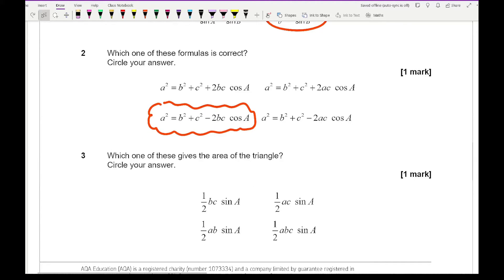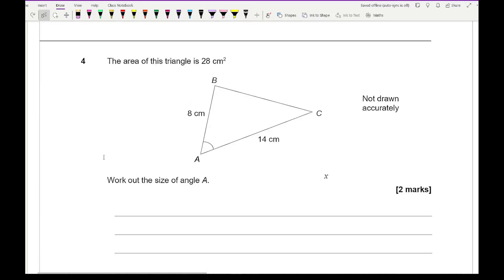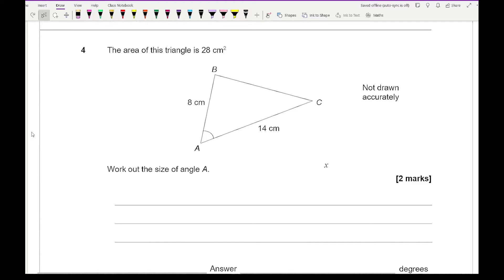For our next one number 3 it says which of the following gives the area of a triangle? Now here what you're looking for is the three letters so no repeated letters whether it be uppercase or lowercase in which this first one is the only formula which uses bc and then we've got the other letter there. So moving on to question 4 it says the area of this triangle is 28cm squared and it says work out the size of angle a. I'm not too sure why we've got a rogue x so let's just get rid of that.